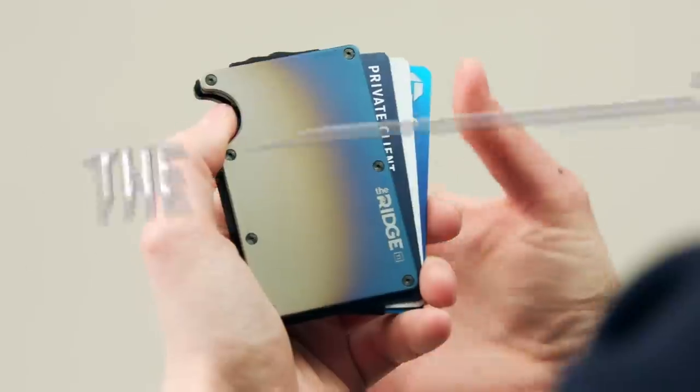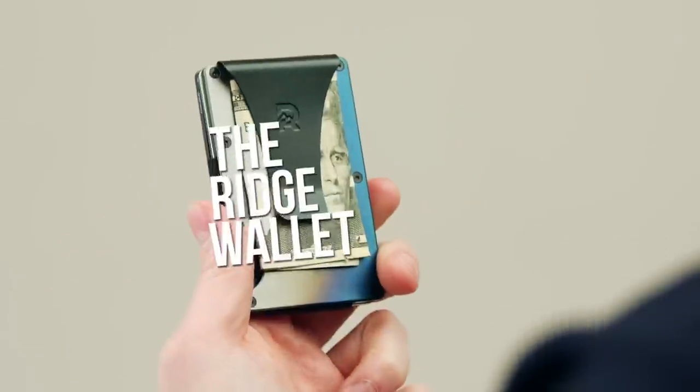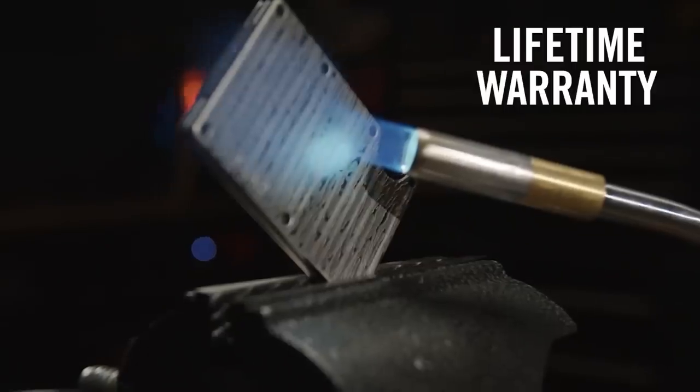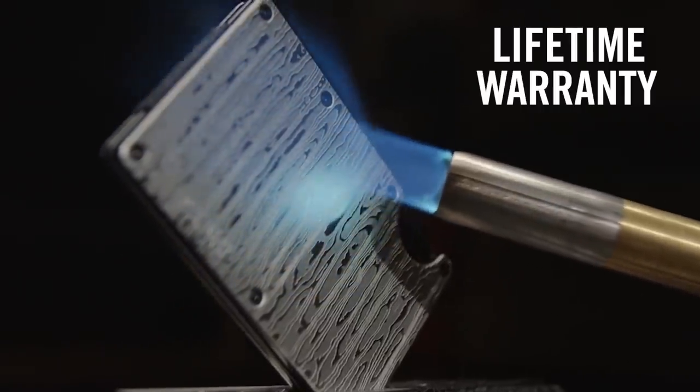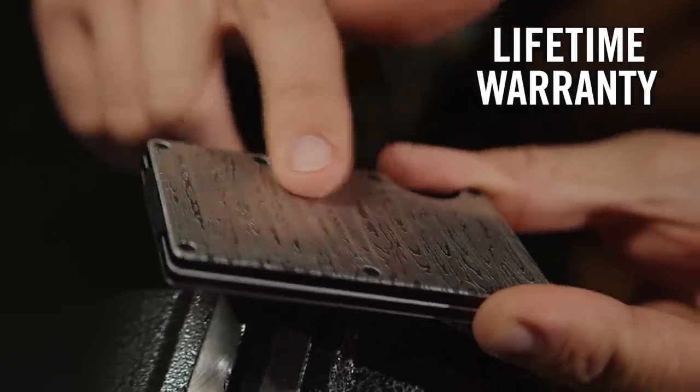This video is sponsored by the Ridge wallet, the wallets that come with a lifetime warranty and can withstand even the weather on Jupiter. More about them at the end of the video.